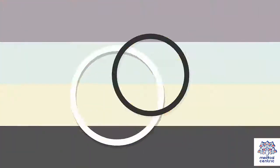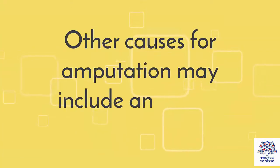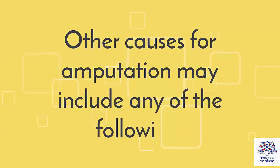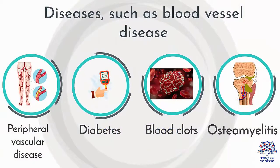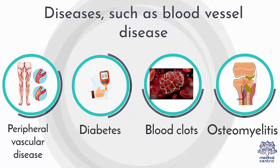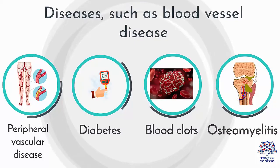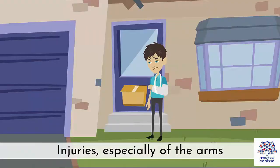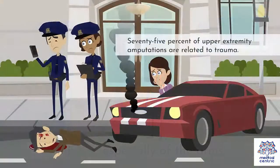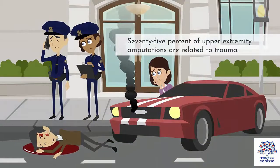Other causes for amputation may include: diseases such as blood vessel disease, called peripheral vascular disease or PVD, diabetes, blood clots, or osteomyelitis — an infection in the bones. Injuries, especially of the arms — 75% of upper extremity amputations are related to trauma.